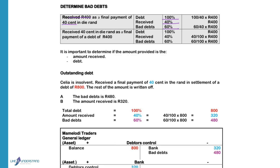The amount received is given, so it means the 40% that was received equals 400 Rand. If you want to calculate the bad debts, the percentage that you want to calculate is 60 divided by the percentage that you know, 40, times 400.